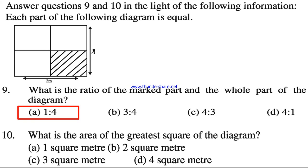Question number 10. What is the area of the greatest square of the diagram? The greatest square of the diagram, 2 meter and 2 meter, so the area will be 4 square meters.